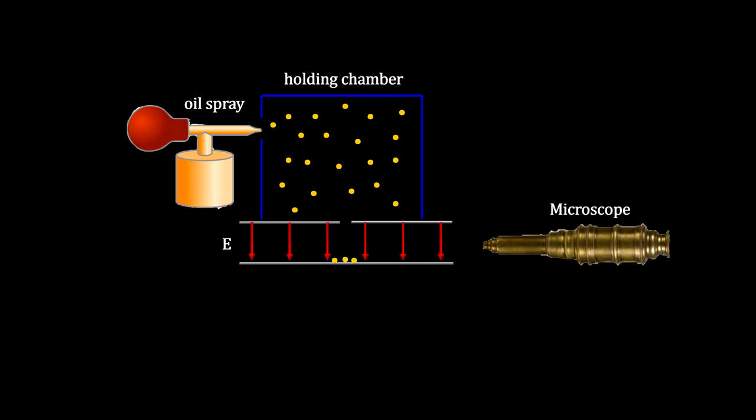Controlling the electric potential across the plates would cause any charged droplets to rise or fall. Finding the voltage that caused a droplet to be suspended above the bottom plate indicates that the downward force of gravity was equal to the upward electrical force.